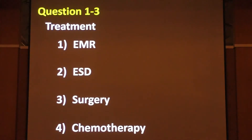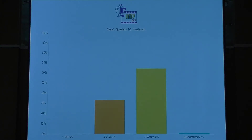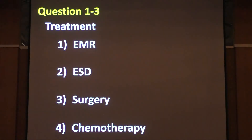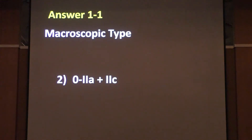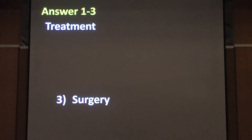The third question is treatment — how do you treat this lesion? Let me show you the answers. For macroscopic type, the correct answer is 0-2B plus 2C. Based on our pathological review, the correct answer for diagnosis is SM-based cancer, and the treatment selection is surgery.